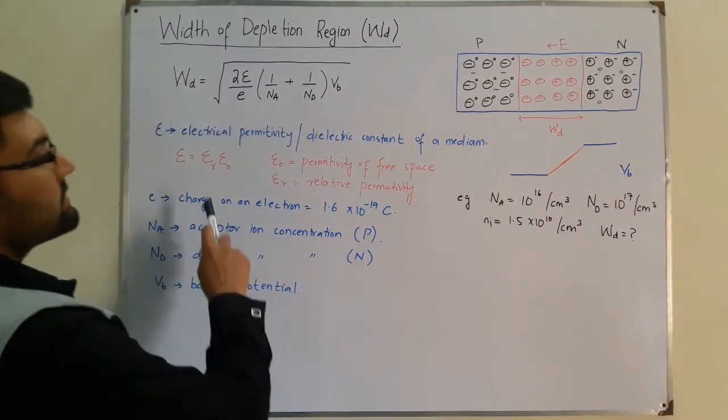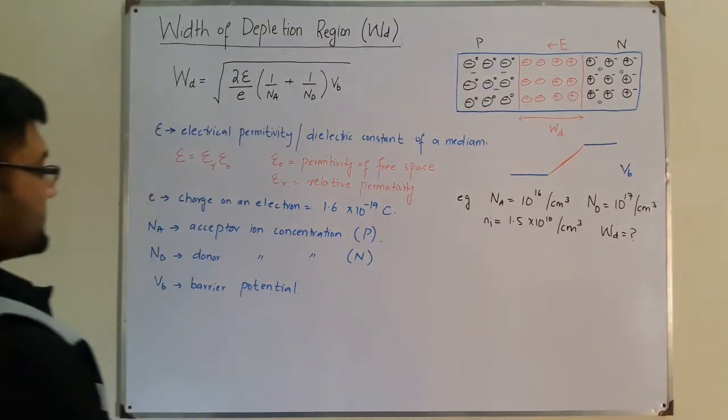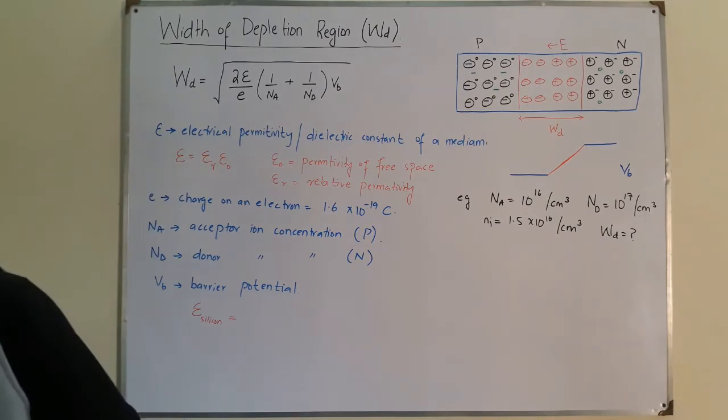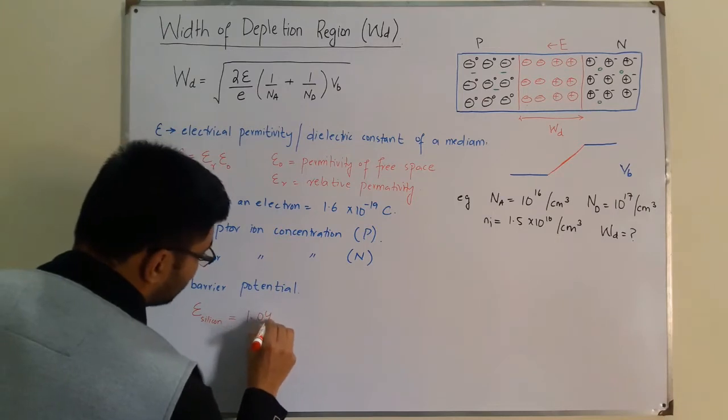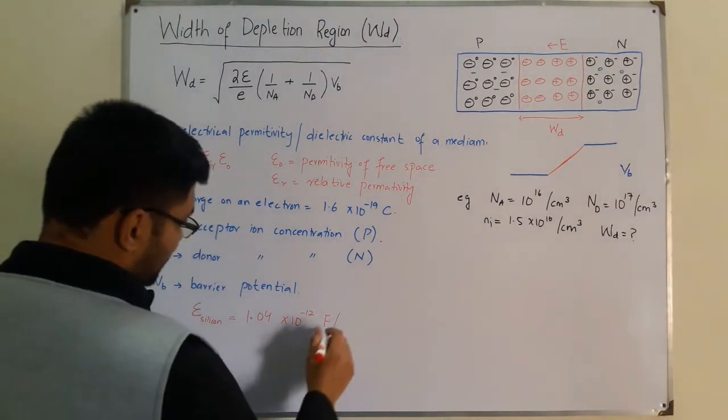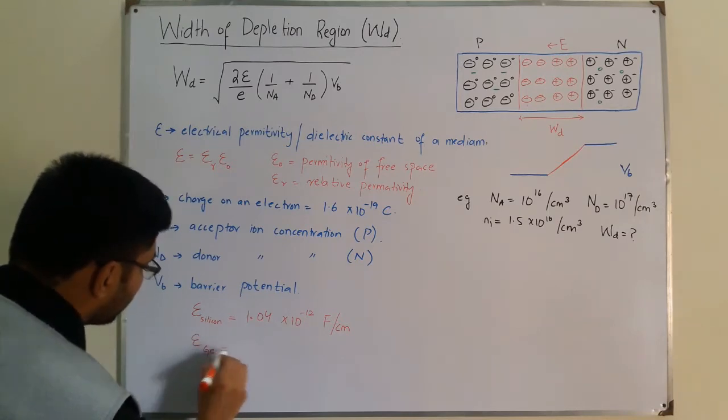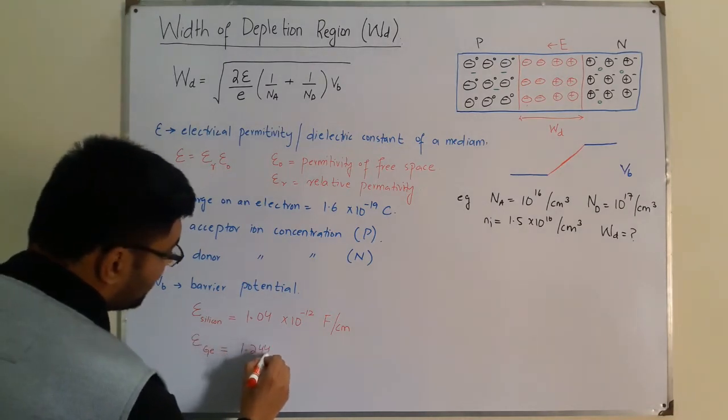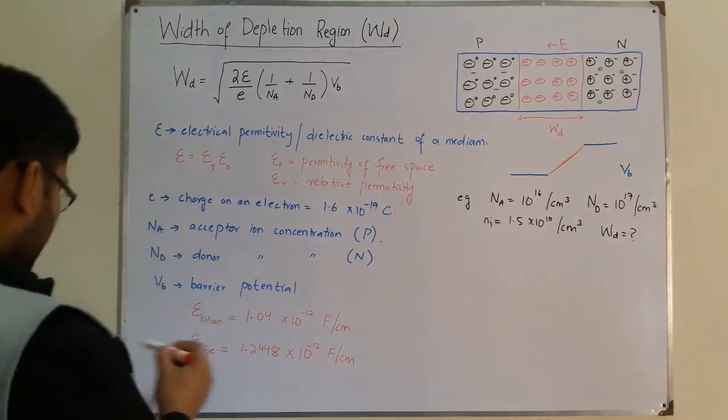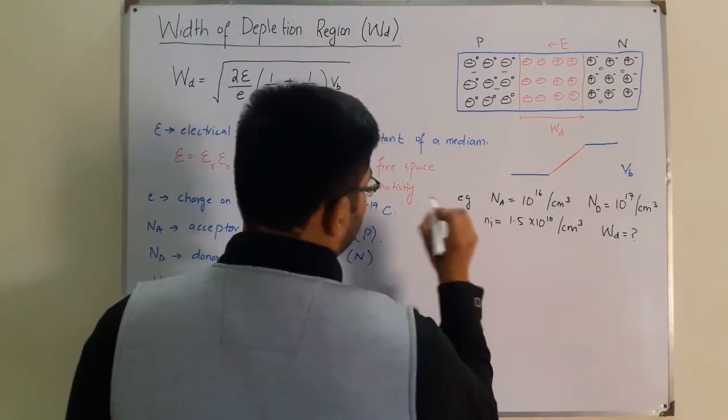These are the same values from the previous example. What do we have in the formula of WD? We have 2 epsilon, so I need epsilon. The value of epsilon for silicon is 1.04 into 10 to the power negative 12 farad per centimeter. For germanium, epsilon is 1.2488 into 10 to the power negative 12 farad per centimeter. In this example, we're given that this is a silicon semiconductor.